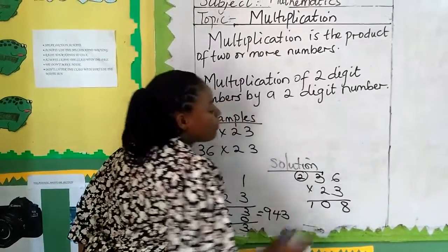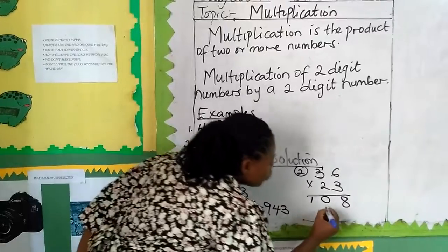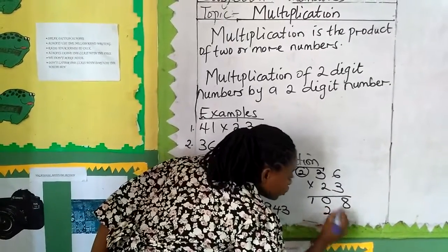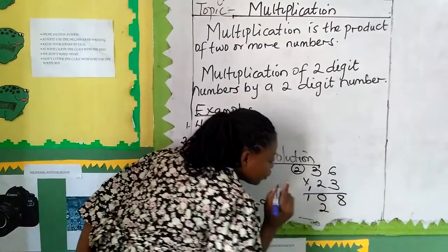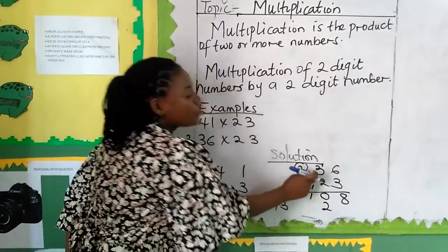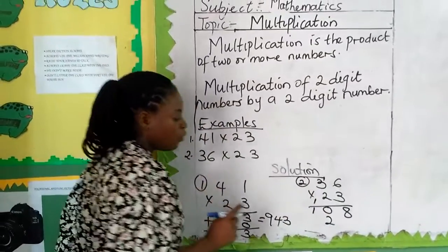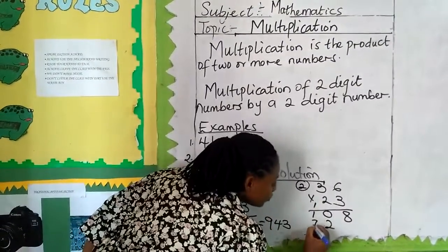2 multiplied by 6 gives us 12. So remember to write your 2, not 12. Put your 1 here so you can remember. 2 multiplied by 3 gives us 6, plus 1 is 7.